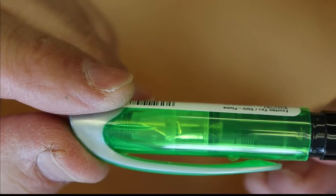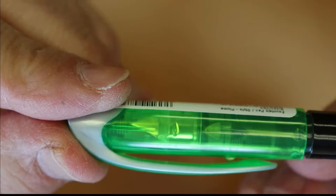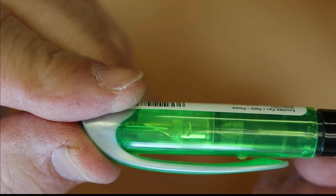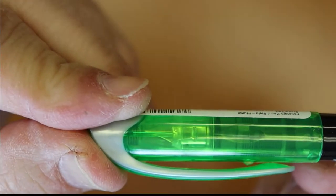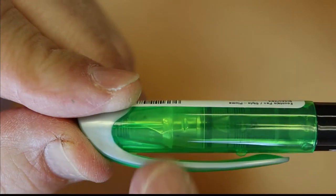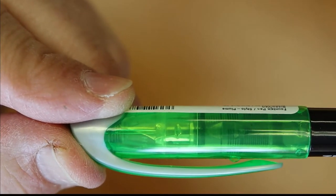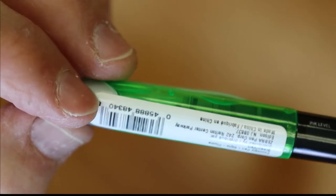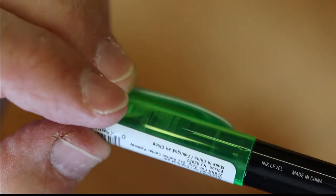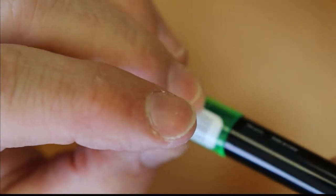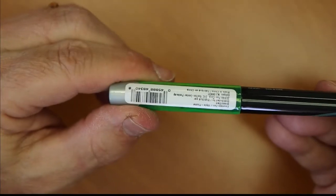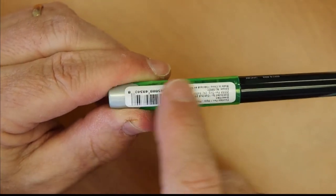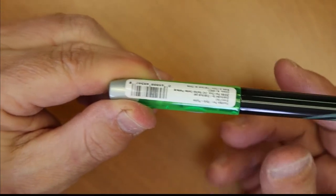As you put the pen in there you can see it spring down, and so that's going to give you a good seal on this pen. Again there's your labeling. You'll probably take that off.